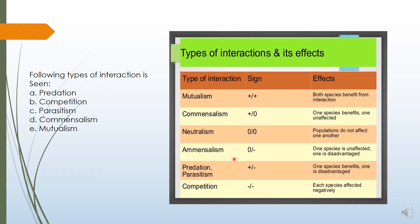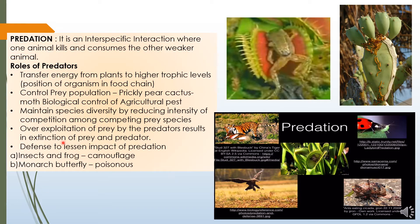In this video I am going to discuss one of these interactions called predation. What is predation? It is an interspecific interaction where one animal kills and consumes the other weaker animal. A tiger eating a deer — the tiger is the predator and the deer is the prey. Tiger and deer belong to different species, making it an interspecific interaction.